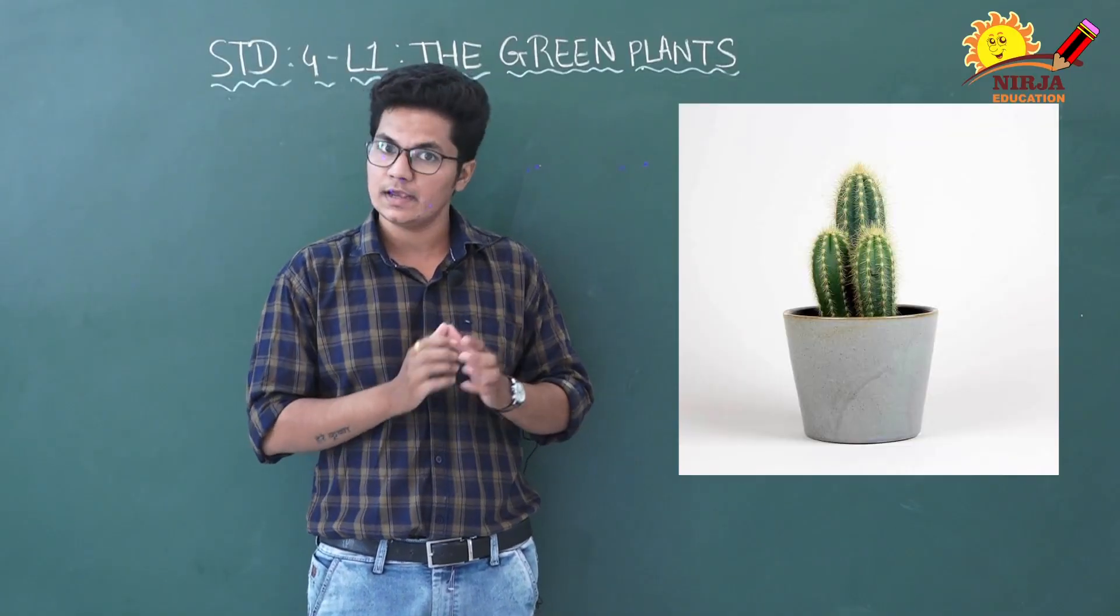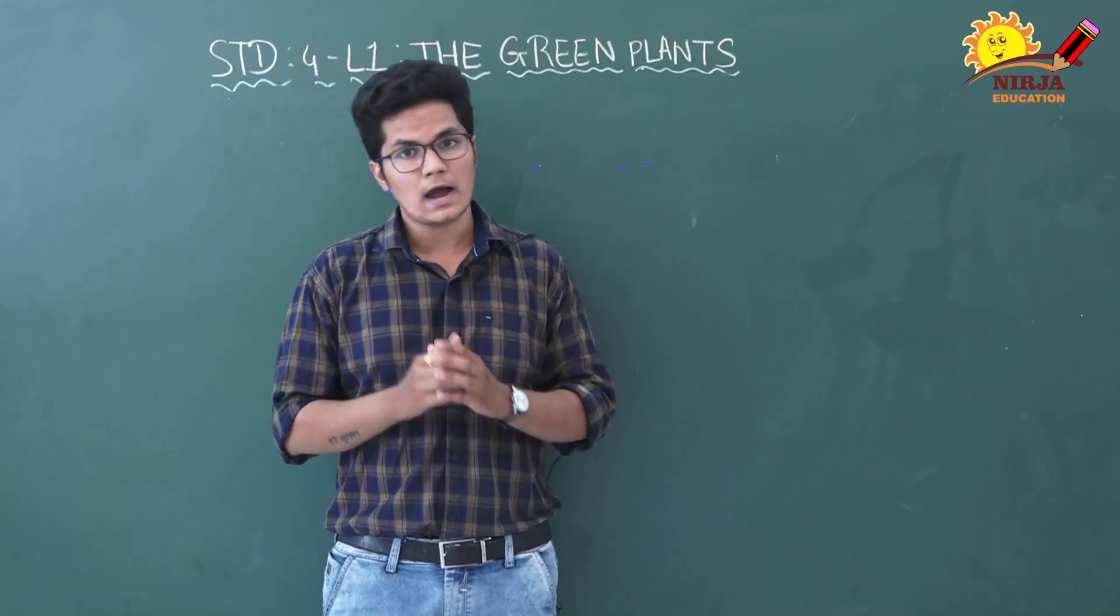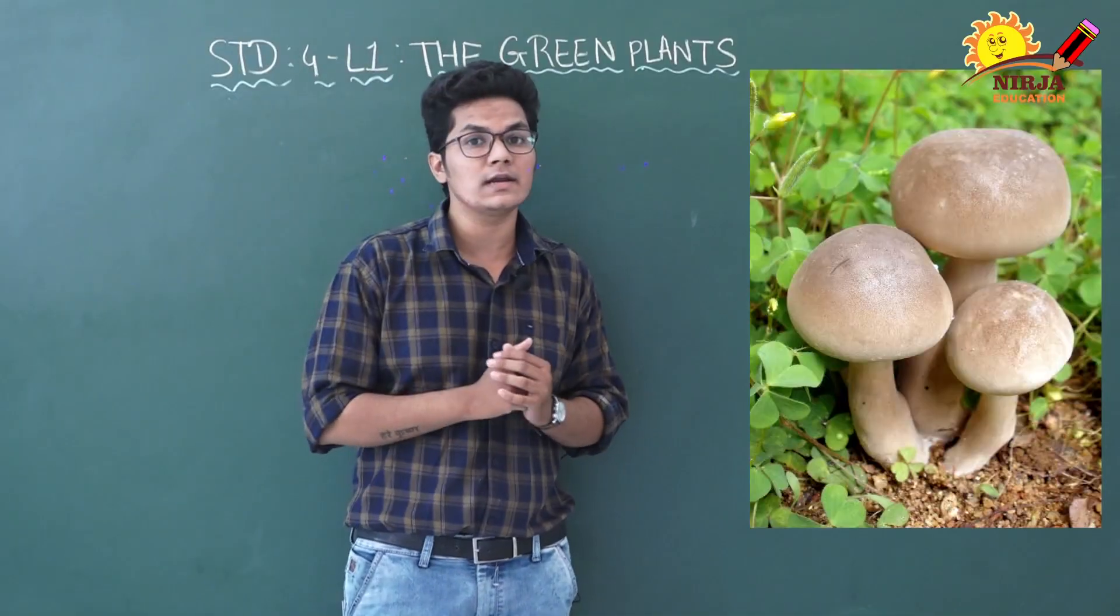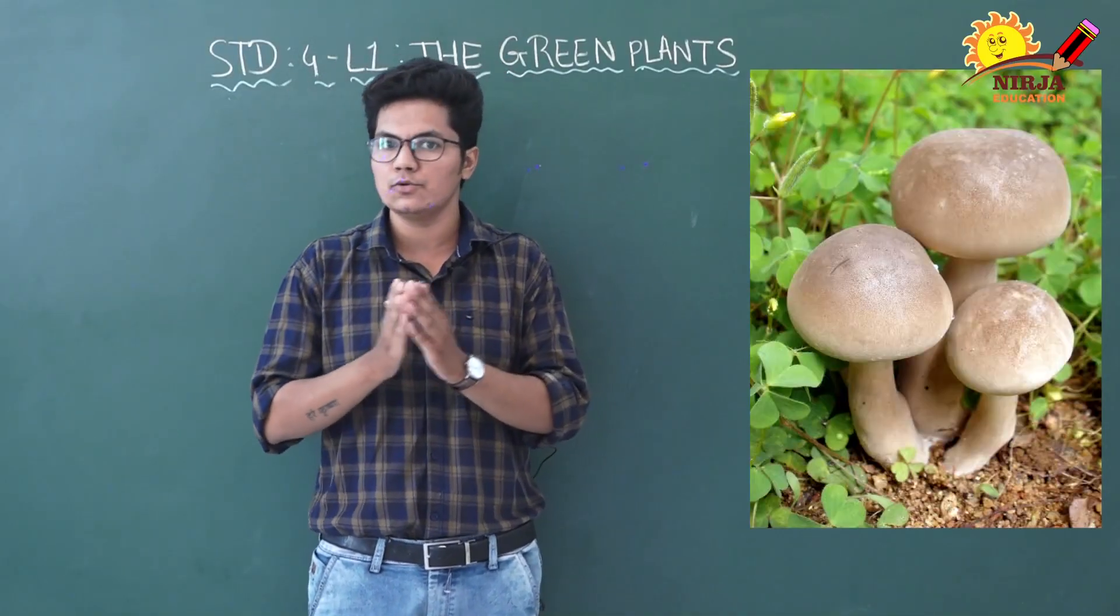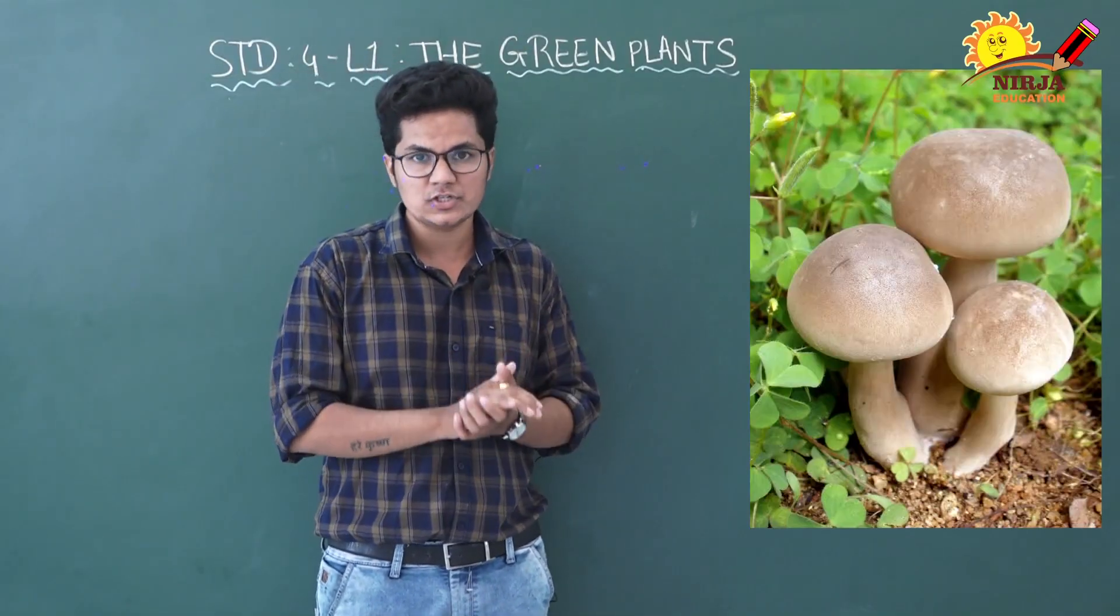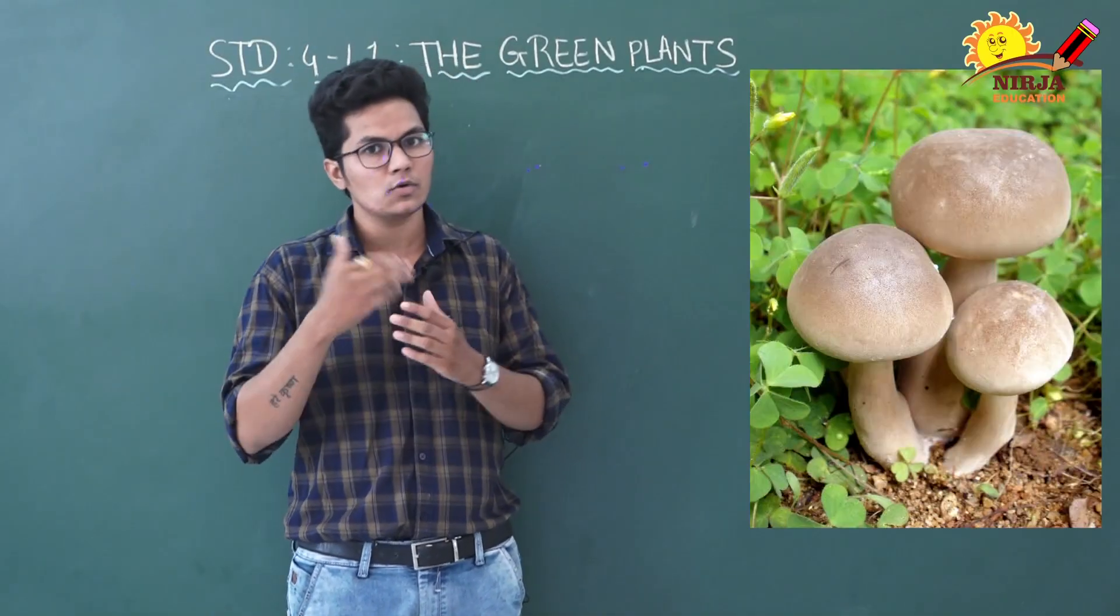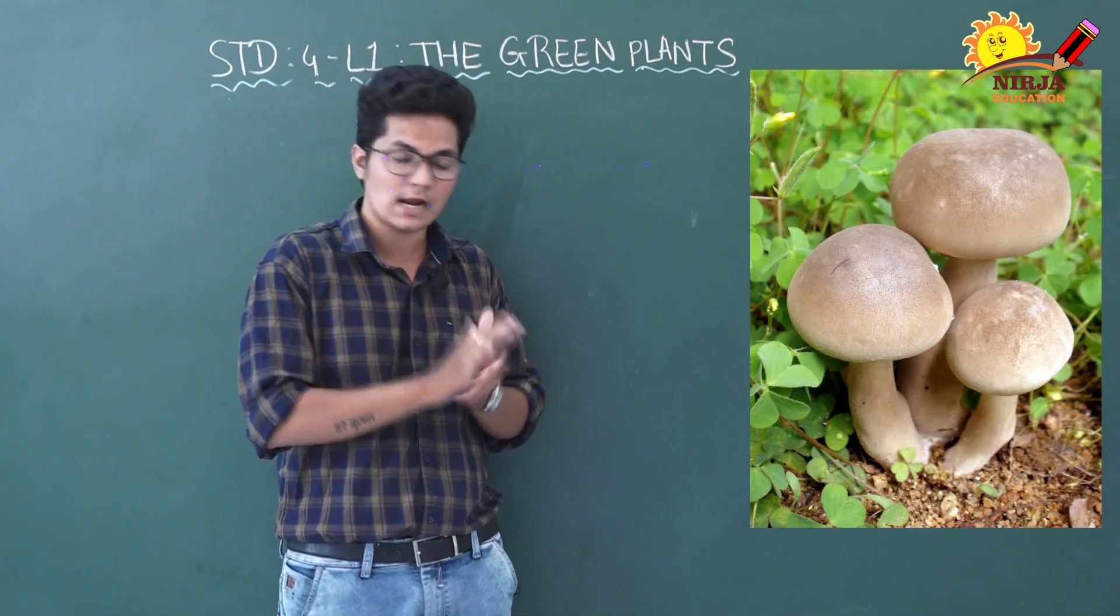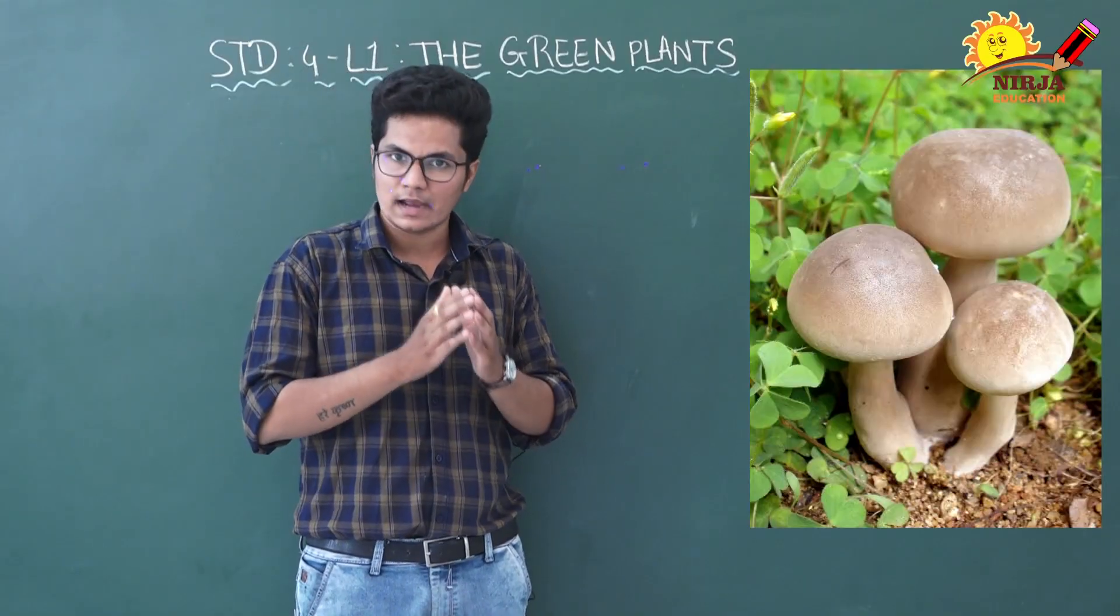So they can make food by the photosynthesis process. Mold and mushrooms are non-green plants. You can see the picture of mold and mushroom. They are non-green plants because they do not have chlorophyll. Chlorophyll is the substance which is the reason for green color. So can they make food? No, they cannot make food by photosynthesis.